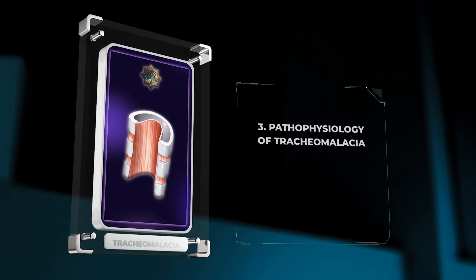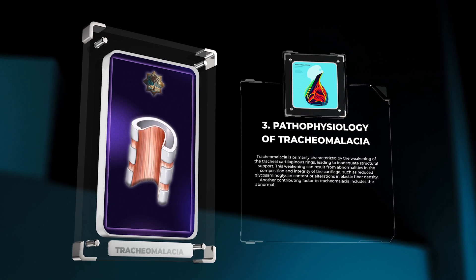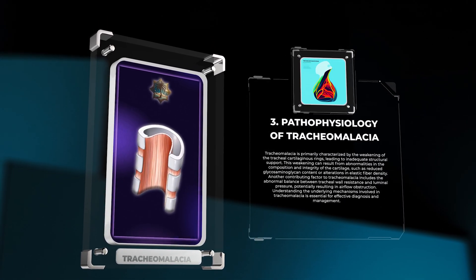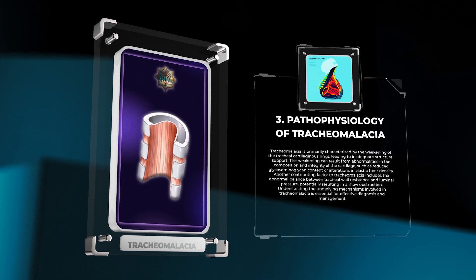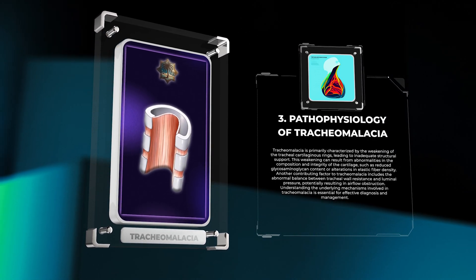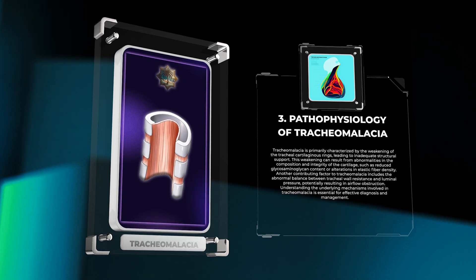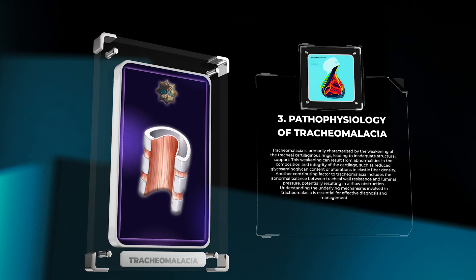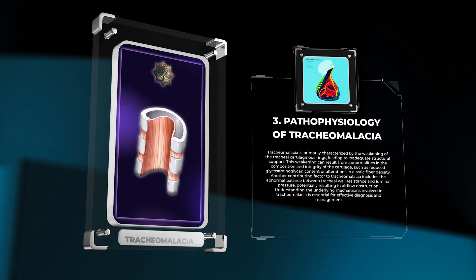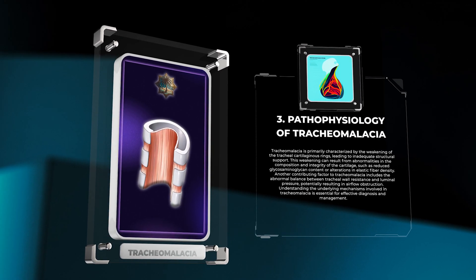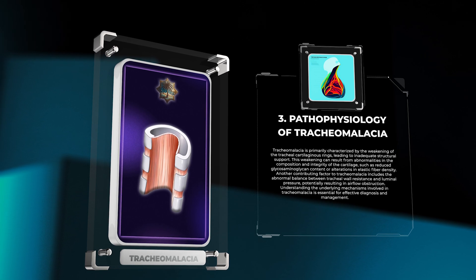Tracheomalacia is primarily characterized by the weakening of the tracheal cartilaginous rings, leading to inadequate structural support. This weakening can result from abnormalities in the composition and integrity of the cartilage, such as reduced glycosaminoglycan content or alterations in elastic fiber density. Another contributing factor includes the abnormal balance between tracheal wall resistance and luminal pressure, potentially resulting in airflow obstruction.